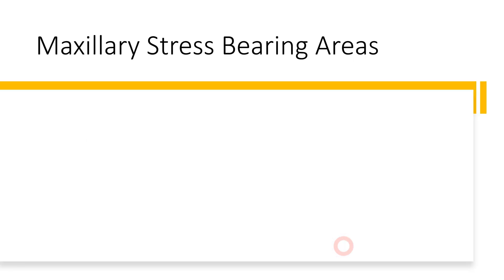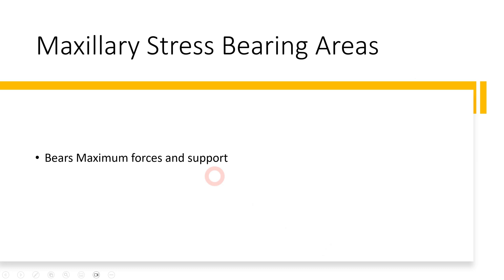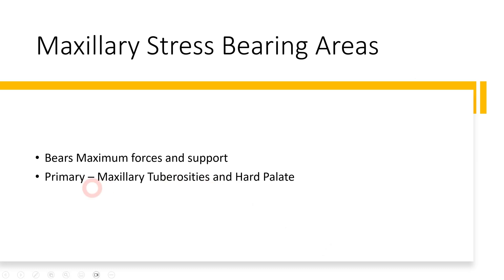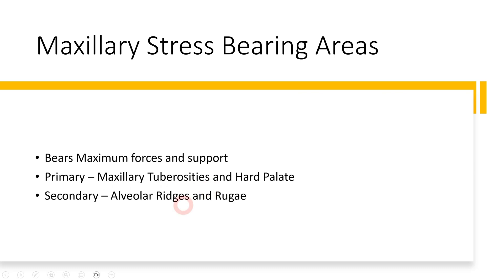Let's first talk about maxillary stress bearing areas. These areas bear the maximum force and provide the maximum support for the intraoral prosthesis that we will build. We can divide the stress bearing areas into two parts: firstly the primary stress bearing area, which bears the maximum force — in maxilla these are mainly maxillary tuberosities and hard palate. The secondary stress bearing areas, which provide some support, are mainly the alveolar ridge and rugae.